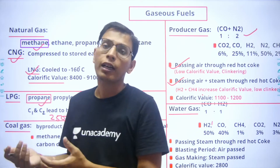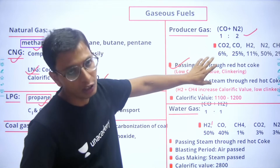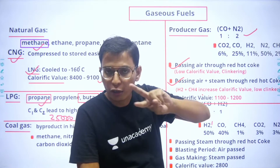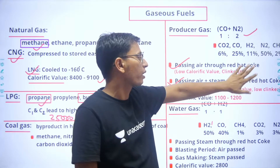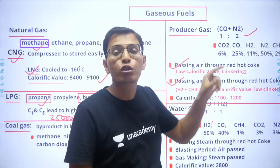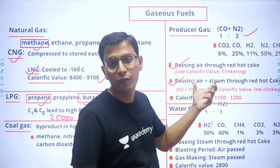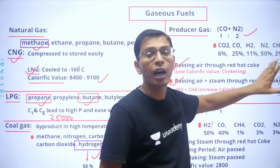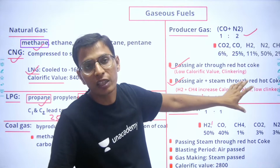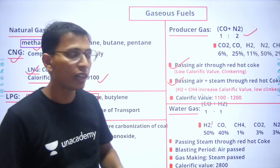The producer gas process operates at around 1100 degrees centigrade. The problem with this process is that it has a lower calorific value, around 1100–1200 kcal/Nm³. A second important process involves passing a mixture of air plus steam through red-hot coke, which produces hydrogen and methane in addition to other gases.